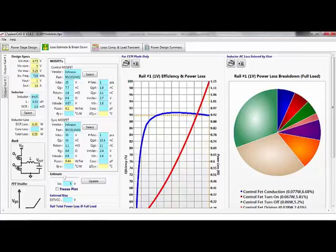For circuits with multiple rails, the loss is estimated per rail. To select the rail, simply activate the corresponding tab on the left side of the window.